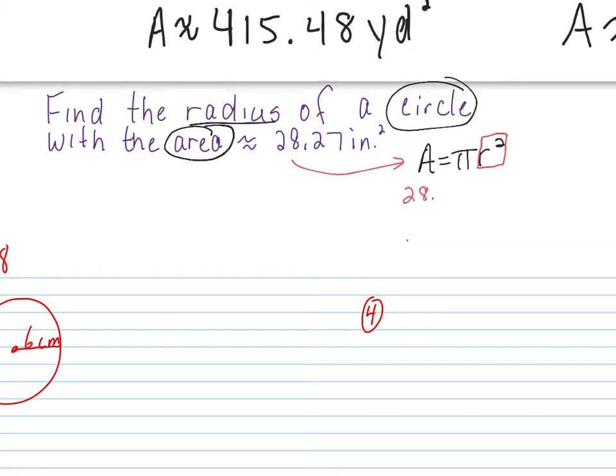So I'm going to plug that in for my area. 28.27 equals pi times, we don't know the radius, but we have to write radius squared. I have to start getting that by itself. How do I undo this and start solving for the radius, Jose? Divide both sides by pi.